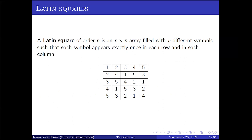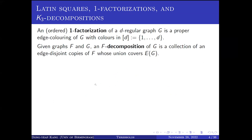Let me begin with some basic definitions. A Latin square of order n is an n by n array filled with n symbols such that each symbol appears exactly once in each row and each column. Here we have a Latin square of order five, and you can see for each row and each column, there are five symbols appearing.